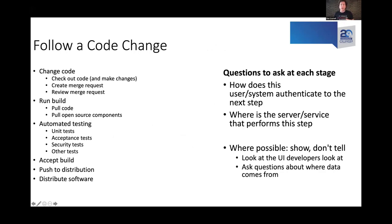Two really important questions to ask at each stage: How does this step authenticate itself to the next step — how does this component let the next component know who it is, what it's doing, what access it's supposed to have? And: where is the server or services performing this step, where does the data go, and where does the code run before moving on? This should be a show activity, not a tell activity — show me the user interface, show me evidence of why you think this is behaving as it is, because it's not always obvious.